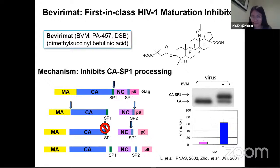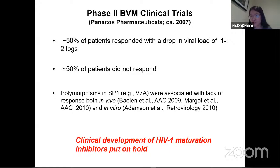Bevirimat actually went into clinical trials, and it went into phase 2B. Fifty percent of patients were unresponsive to the drug. Because of certain polymorphisms within this SP1 region, most notably a valine to alanine change at position 7, this actually caused the compound to be unresponsive to 50% of patients. As a result of this, the clinical development of HIV-1 maturation inhibitors was put on hold.